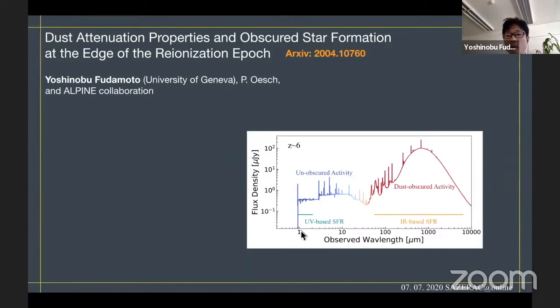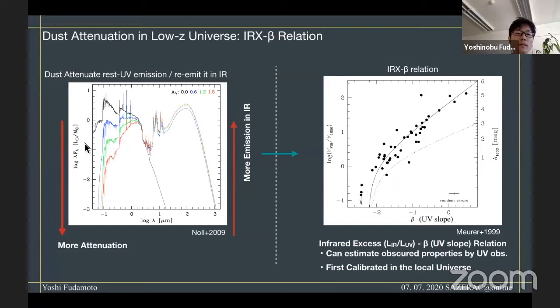As we all know, there are mainly two wavelength ranges where we can observe the star formation activity of galaxies. One is the rest-frame UV wavelengths and another is the far-infrared wavelengths, where we can observe dust-unobscured activity and dust-obscured activity of galaxies. These two wavelength emissions are tightly connected through dust attenuation. If there's more attenuation in these galaxies, the UV spectrum becomes redder and the attenuated energy is transformed into far-infrared emissions.